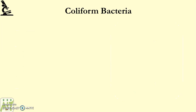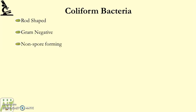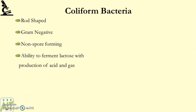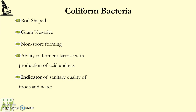So what is coliform bacteria? They are rod-shaped, gram-negative, and non-spore-forming. They have the ability to ferment lactose with the production of acid and gas, and they are an indicator of the sanitary quality of food and water.